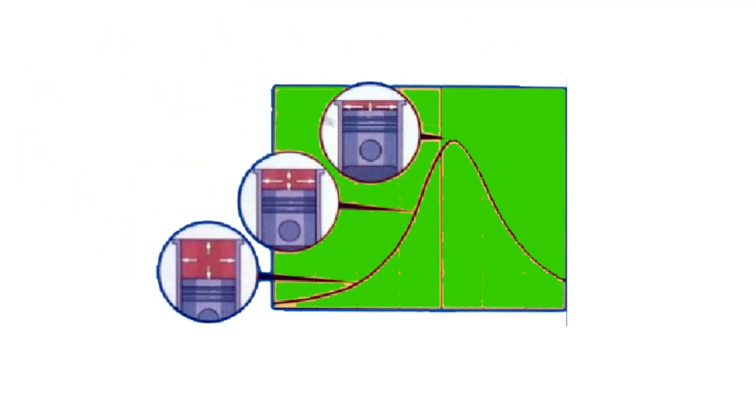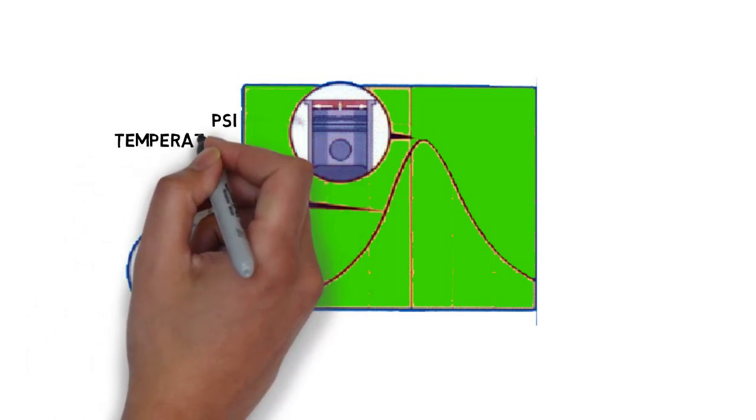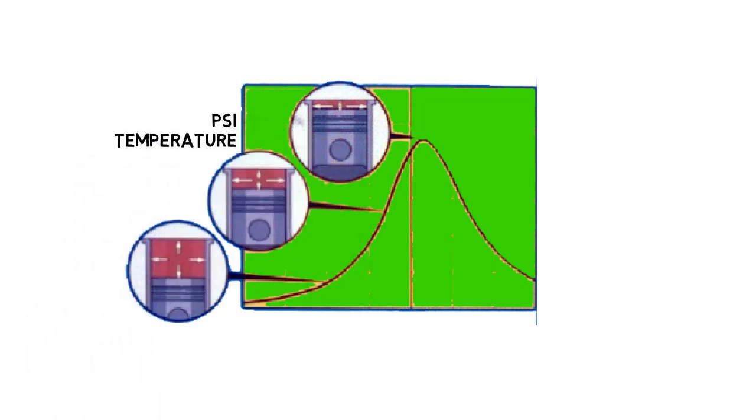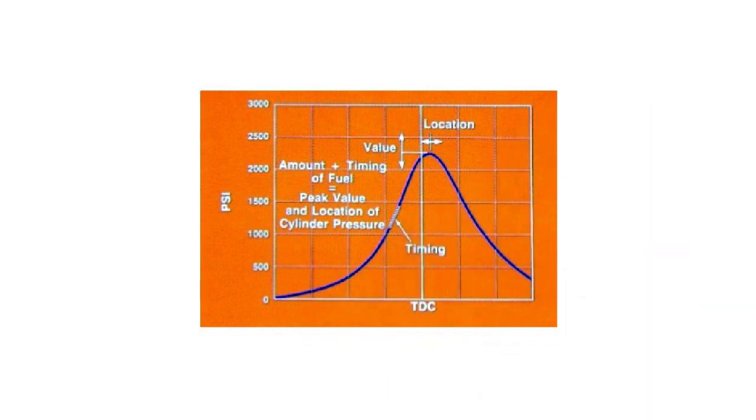As the piston moves upward in the compression stroke, the pressure in the cylinder increases. When the fuel is introduced and begins to burn, the pressure increases to a predetermined maximum value. On a given engine, the amount of fuel introduced and when it is introduced determines the point at which peak pressure occurs and the value of that pressure.